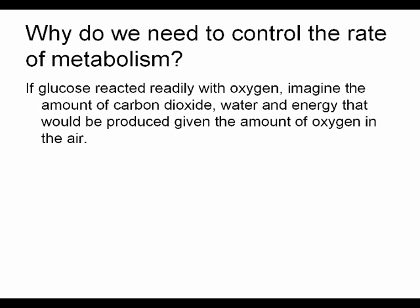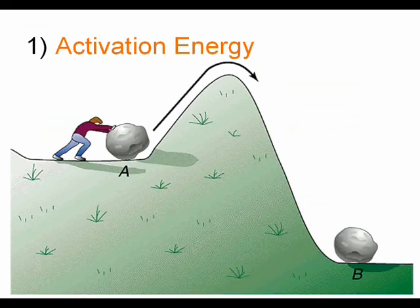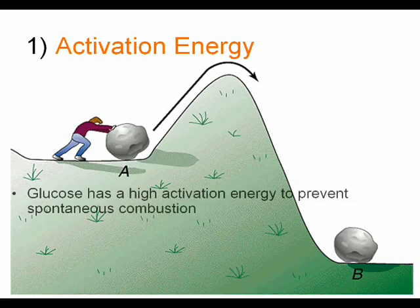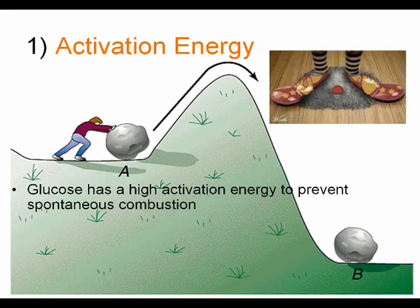Something has to regulate the rate of metabolism so that this doesn't happen. This is why we need activation energies and specific enzymes to help regulate the rate of reaction for metabolism. Activation energy is the minimum collision energy required for a successful reaction. Glucose has a high activation energy — this is to prevent the spontaneous combustion described before.